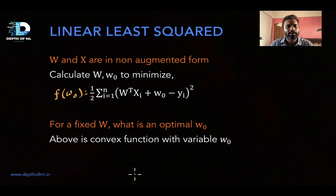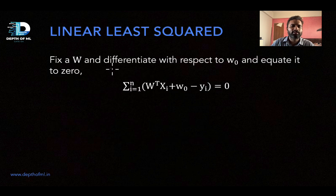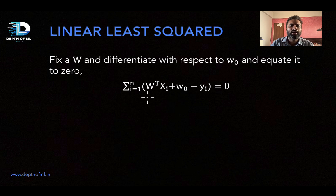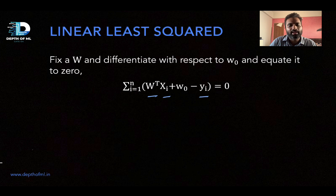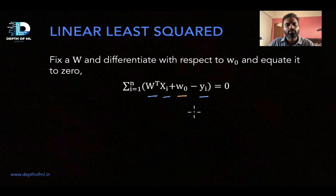This function f(w_0) is a convex function in terms of small w_0, as we have already seen. To minimize a convex function, we differentiate and equate to zero. So we fix capital W, differentiate the entire function with respect to small w_0, equate to zero, and get: summation over all data points of (W^T X_i + w_0 - y_i) = 0.